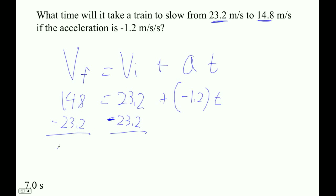That's going to leave me with a negative on that side — negative 8.4. But you know what? It's going to be okay. Because negative 8.4 equals negative 1.2 times T.